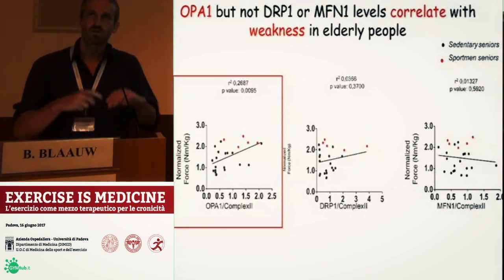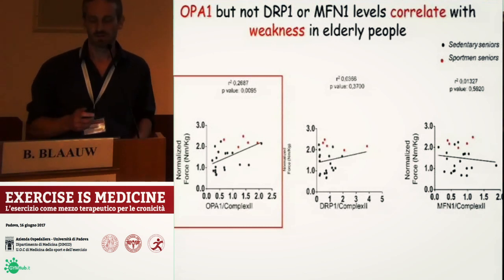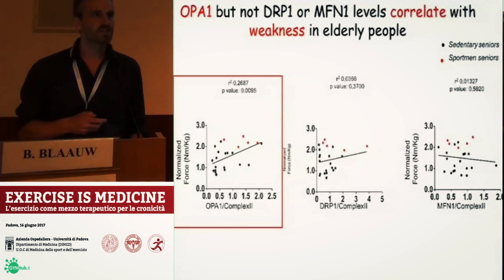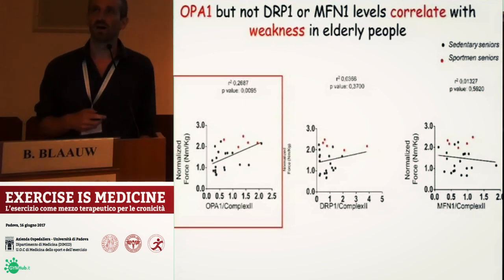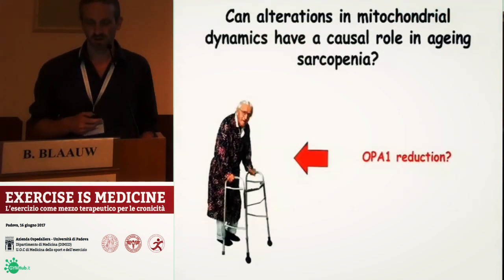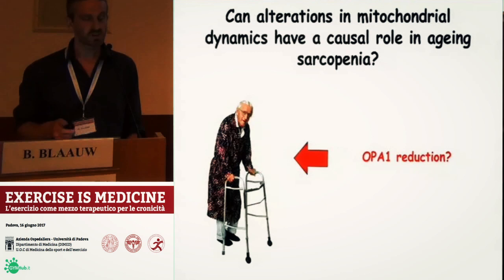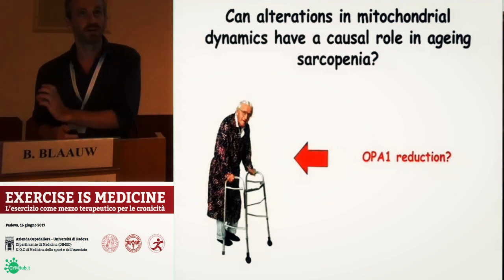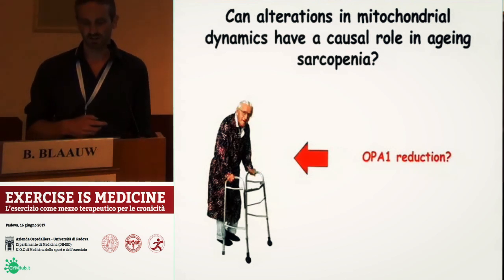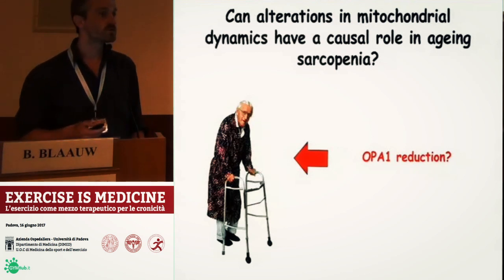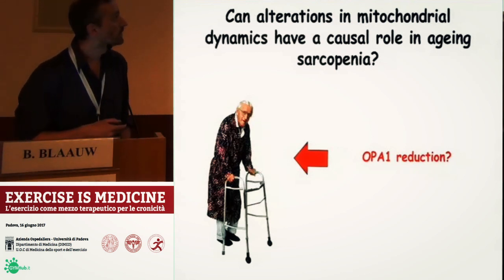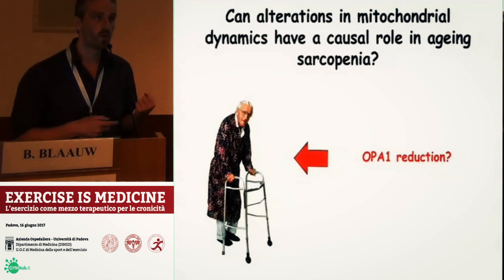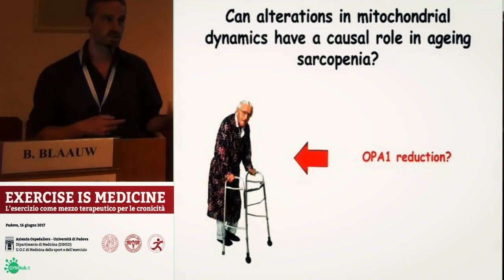So this is all correlation. What we now want to understand is how fundamentally important these mitochondrial networks are during aging — is there a causal role between mitochondrial dynamics and muscle aging and sarcopenia? To address this, what we did is simply take away OPA1 and see what happens to our muscles.